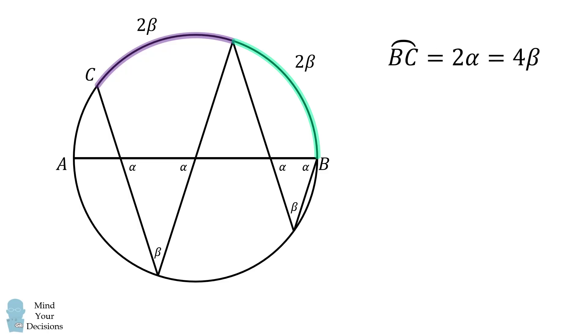We thus have BC is equal to 2 alpha, which is equal to 4 beta, which means that 2 alpha is equal to 4 beta. We'll divide both sides of this equation by 4 to solve for beta. Beta is equal to alpha over 2.